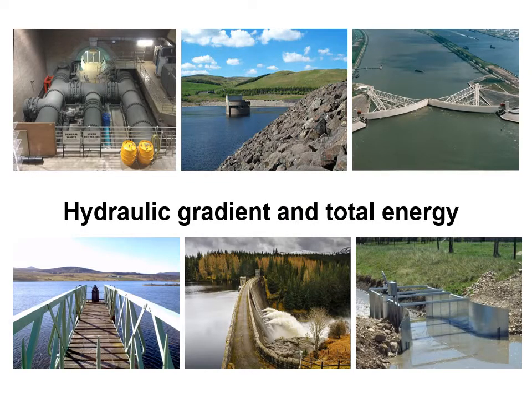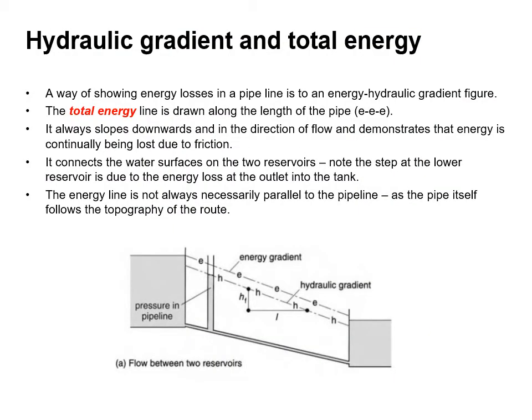We're now going to examine what we mean by hydraulic gradient and total energy. A way of showing energy losses in a pipeline is to use an energy hydraulic gradient figure. The total energy line is drawn along the length of the pipe — marked with E — it slopes downwards in the direction of flow, demonstrating that energy is continually being lost due to friction. It connects the water surfaces of the two reservoirs in this case.